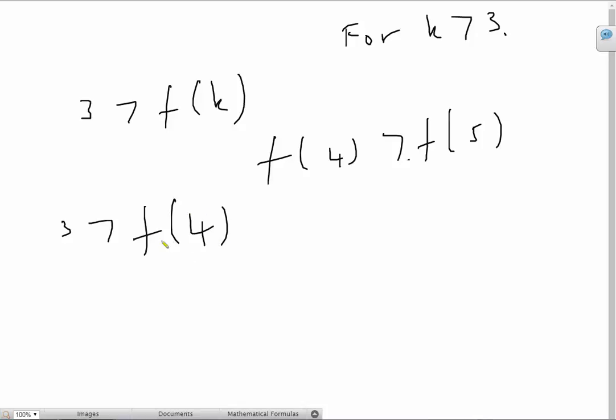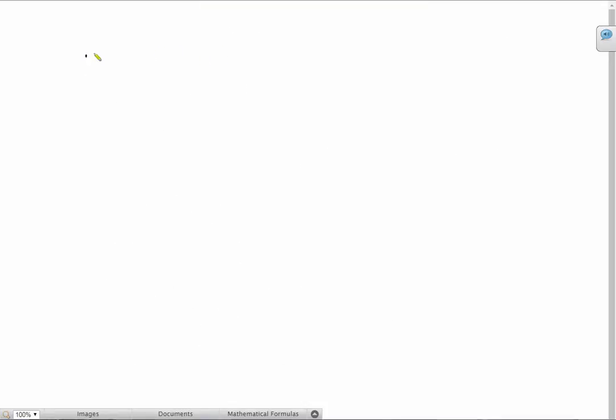So we have 3 is greater than f of 4 over here and this is just 3 is greater than 4 plus 1 cube divided by 4 cube and this gives us 3 is greater than 125 divided by 64 and we get 192 is greater than 125. Therefore our induction has finished and we have indeed proven that 3 raised to x is always going to be greater than x raised to 3 for all x greater than 3. It was clearly more efficient than 2 and we also proved that it's more efficient than any other number greater than itself.